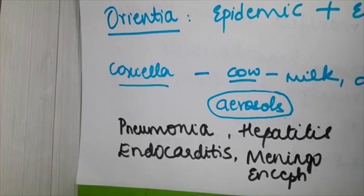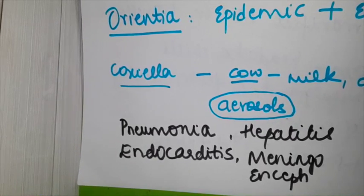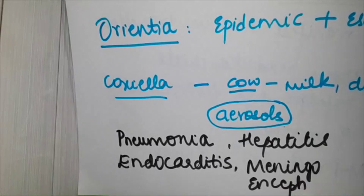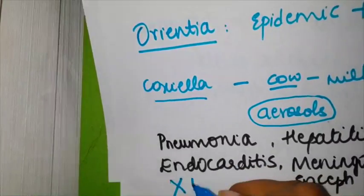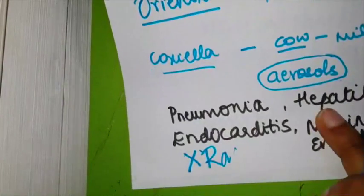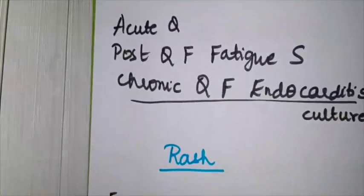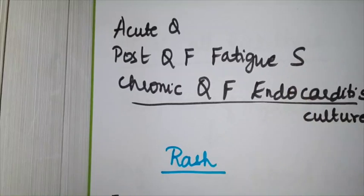Let's make Coxiella burnetii more interesting. Coxiella burnetii causes Q fever. It was called Q fever because the etiological agent was not known. The reason to name it Q fever was it used to cause severe illnesses like pneumonia, endocarditis, hepatitis, and meningoencephalitis. Just remember it attacks all the vital organs. But one classical point: there is no rash. There is no rash. So we were sure it wasn't in the rickettsial group at least.